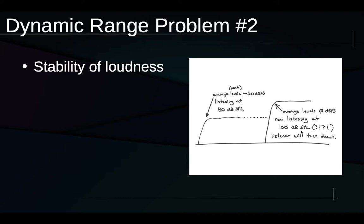So the listener will have to turn down the playback volume to compensate for this instability and unpredictability of loudness in the signal. If listeners are constantly forced to turn the volume up and down, that's going to be annoying, and they probably won't want to keep listening. That's the second problem with dynamic range.